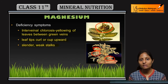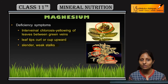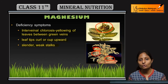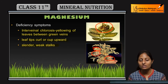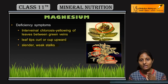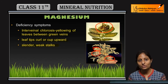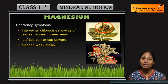In magnesium deficiency, chlorosis is the primary symptom affecting the plant. Note that chlorosis is different from necrosis. In magnesium deficiency specifically, chlorosis will appear in the plant — these are the key deficiency symptoms of magnesium ion.